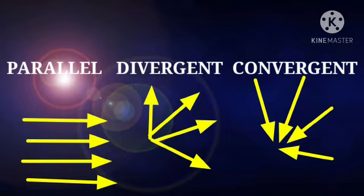Parallel, divergent and convergent. A parallel beam has light rays which never meet with each other. They are parallel to each other and they never meet at any point.